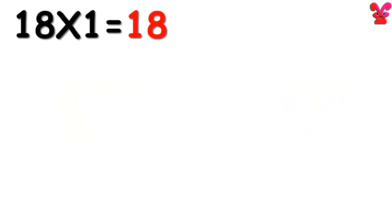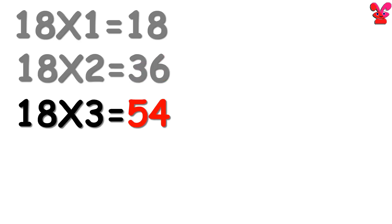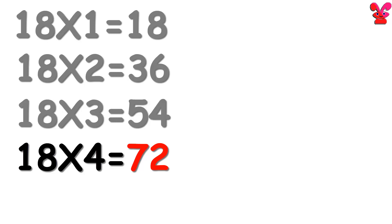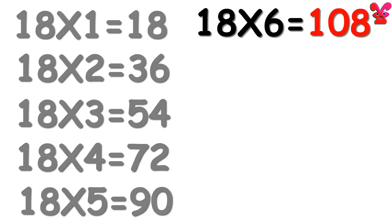18 ones are 18. 18 ones are 18. 18 twos are 36. 18 twos are 36. 18 threes are 54. 18 threes are 54. 18 fours are 72. 18 fours are 72. 18 fives are 90. 18 fives are 90. 18 sixes are 108. 18 sixes are 108.